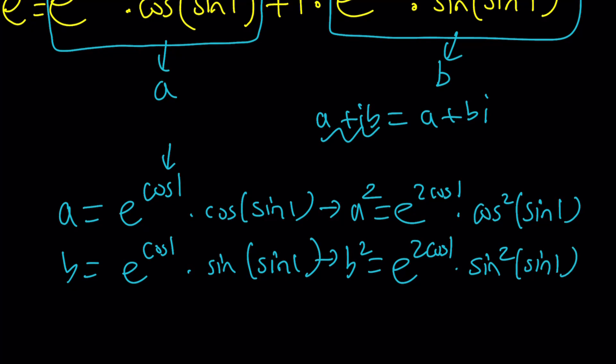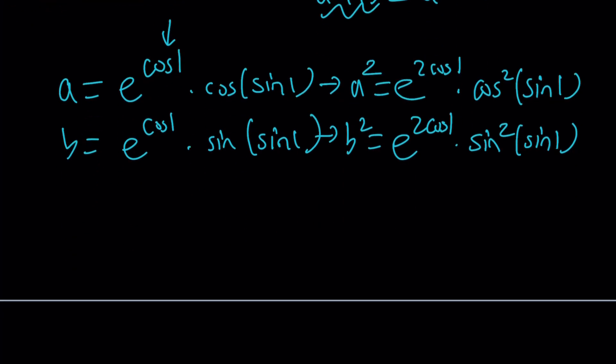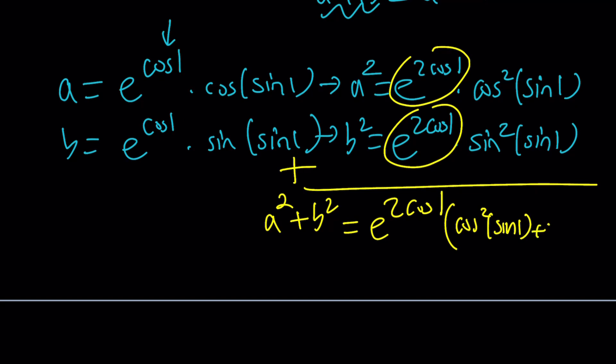Now something magical or mathematical is going to happen here. Hocus pocus, abracadabra. When you add these two things, we have a common factor, which we can pull out: e to the power 2 cosine 1. And then inside the parentheses, you're going to have cosine squared sine 1 plus sine squared sine 1. Sorry about the messy writing, but I hope you get the idea.